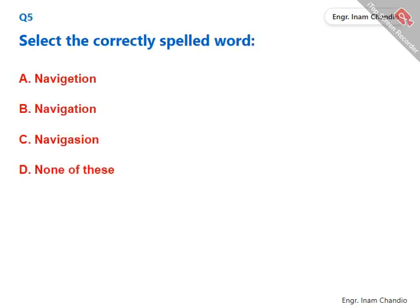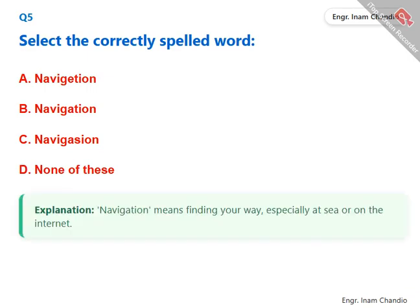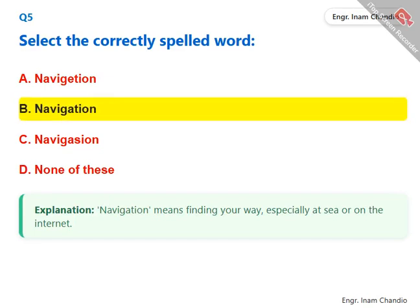Select the correctly spelled word. Navigation means finding your way, especially at sea or on the internet. The correct answer is B. Navigation.